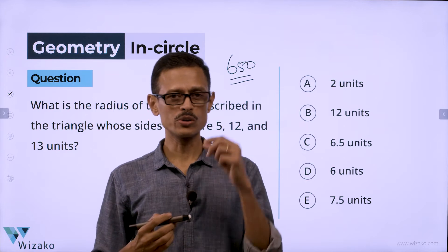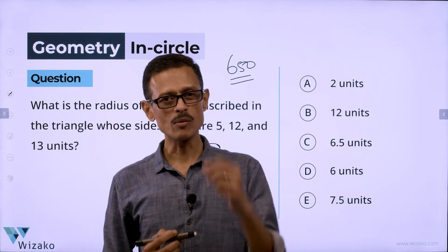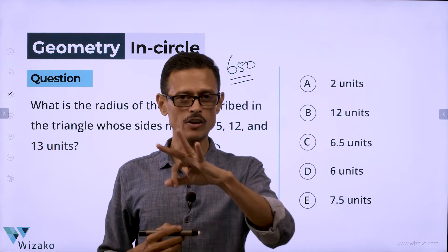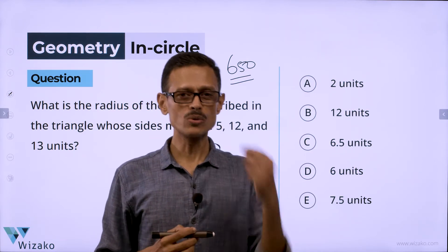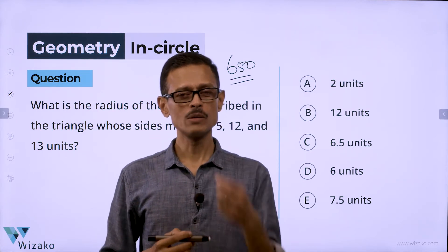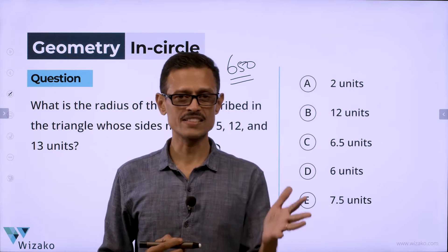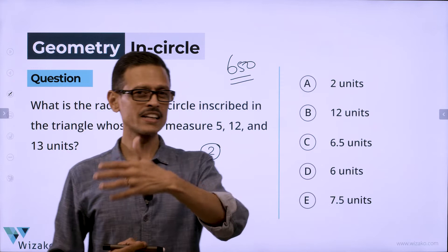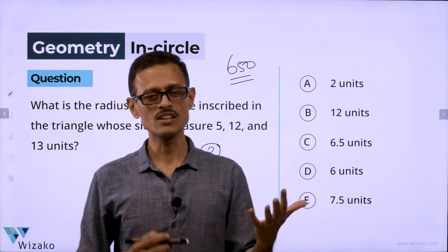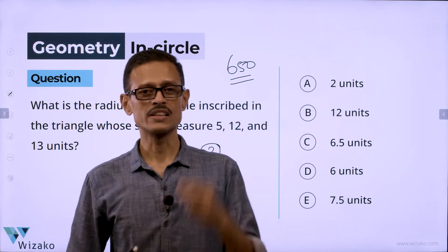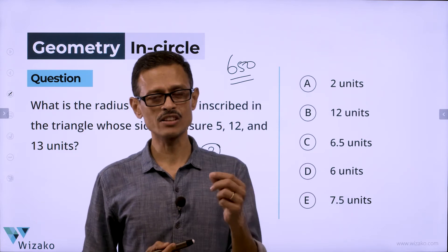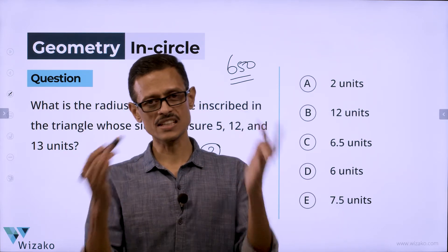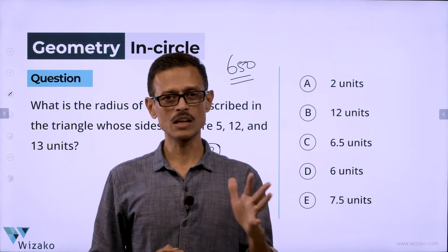The first method will help us understand this framework, and this question lends itself beautifully to illustrate it. The second method involves a formula — it's actually a three-letter formula. Once you know that formula, you'll be able to solve this question in under 20 seconds. So method one is to understand the framework; method two is a formula-based one.